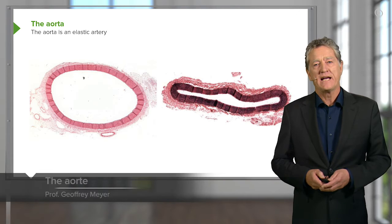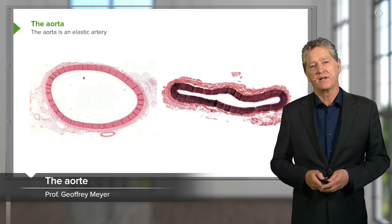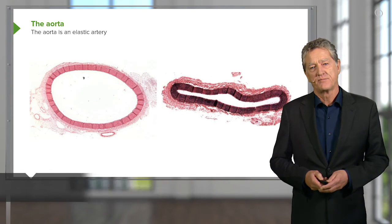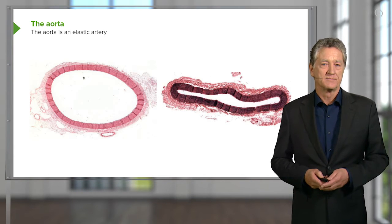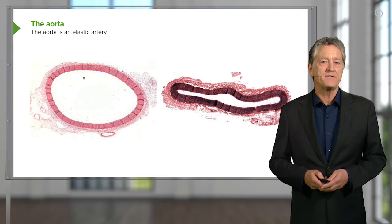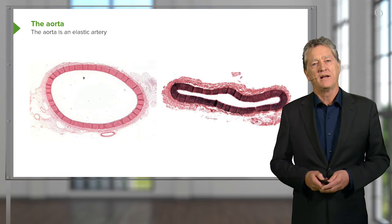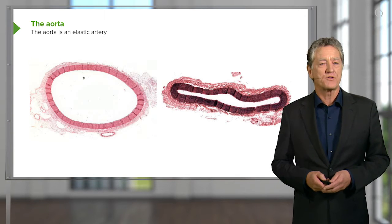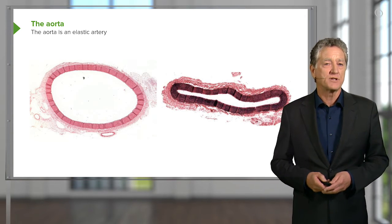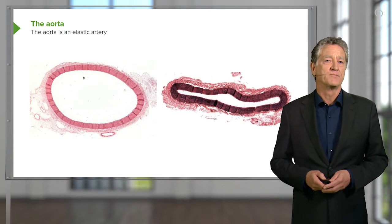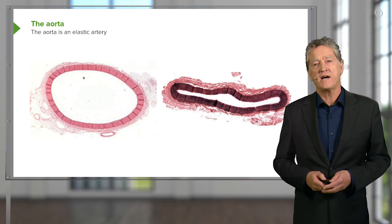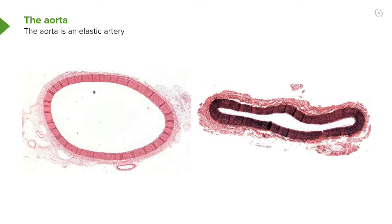Let's look at the aorta and the vena cava. They are very special blood vessels. Here's a section of the aorta. On the left-hand side it's sectioned, and it has been stained with normal hematoxylin and eosin. On the right-hand side, it's a bit collapsed, but that happened during the processing.